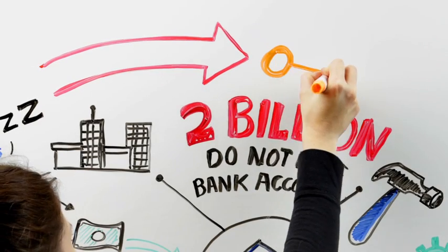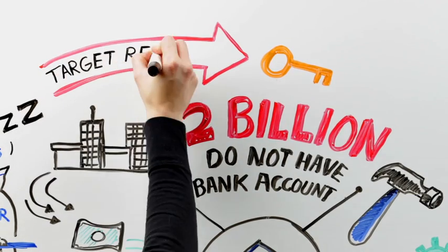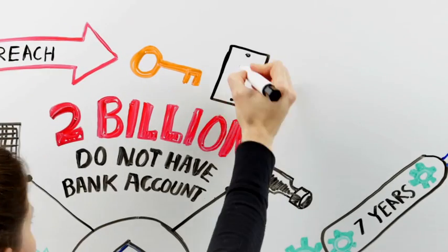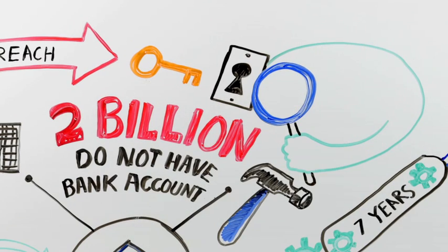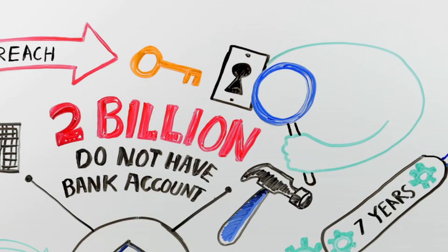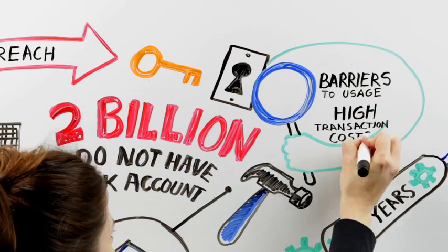When the Bank Group tailors its approach to local conditions, they need to ensure that its programs target and reach the poor. This calls for a more systematic and comprehensive approach to identifying and tackling constraints to financial inclusion, such as barriers to usage and high transaction costs.